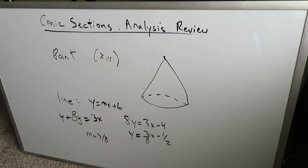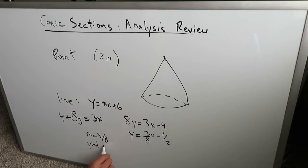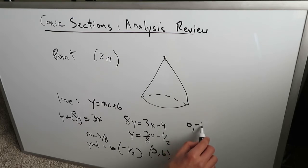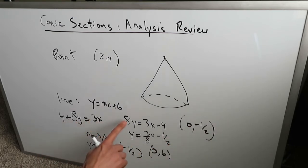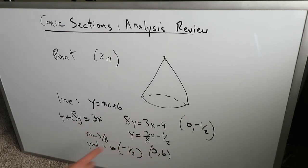It's a relatively flat slope because you have a small number dividing by a large number. A bigger number divided by a smaller number would represent a steep slope. The change in y divided by the change in x is relatively flat here. The other item you determine is the y-intercept. The y-intercept is your b value, which is −1/2, represented as the point (0, −1/2). This represents a conic section — a line with slope 3/8 and y-intercept (0, −1/2).